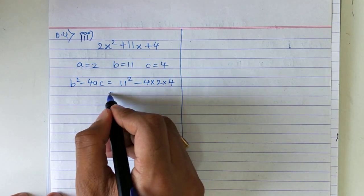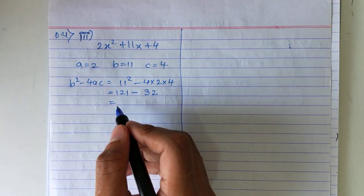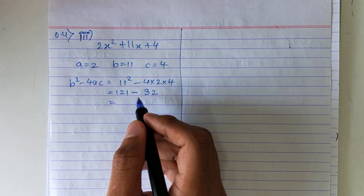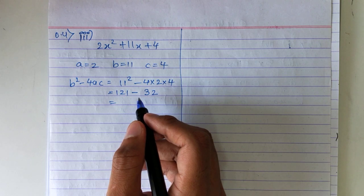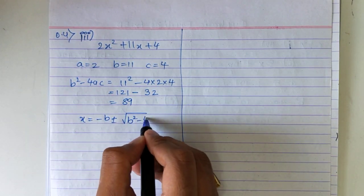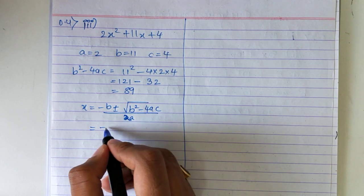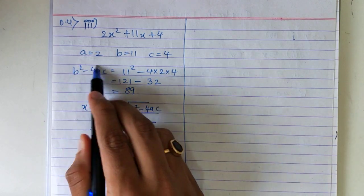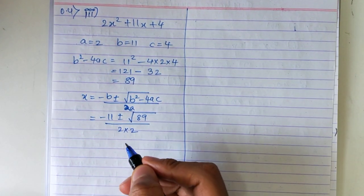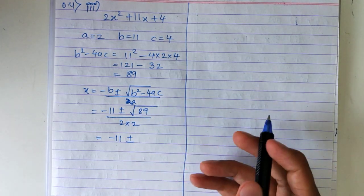So b squared minus 4ac is 11 squared minus 4 into 2 into 4, giving the value as 89. So x is minus b plus minus root of b squared minus 4ac upon 2a. b is 11, b squared minus 4ac is 89, upon 2 into 2.